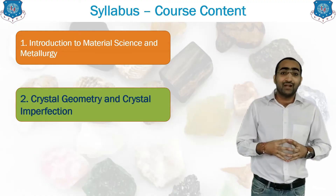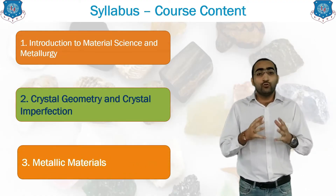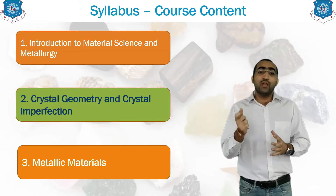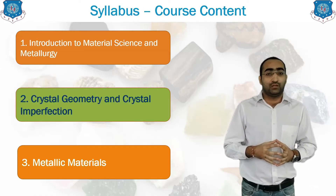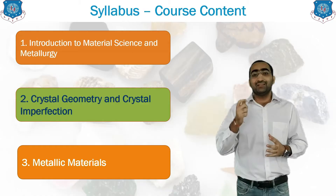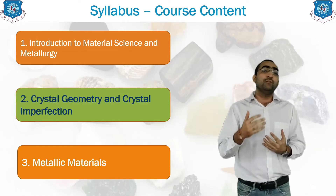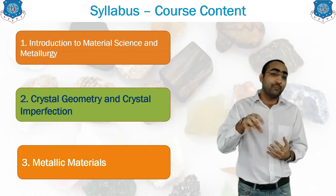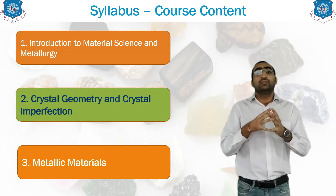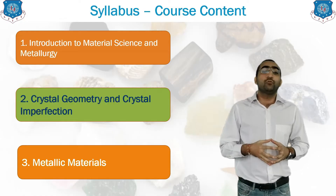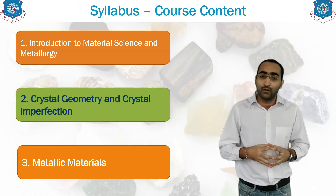The third unit is the metallic material. To study any material, we have to go for the microstructure of the specimen — how we generate that specimen, how we view it under the microscope, and which are the different tests that are going to occur. Each and everything is included in unit number three, that is the metallic material.